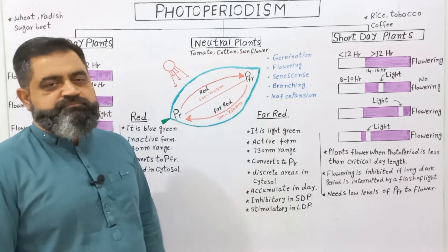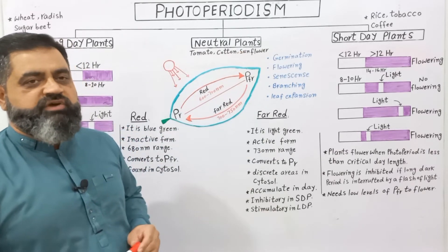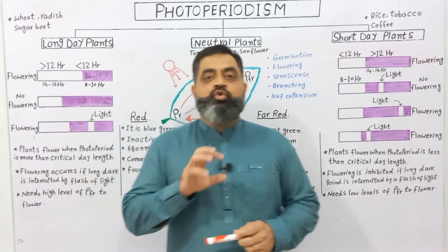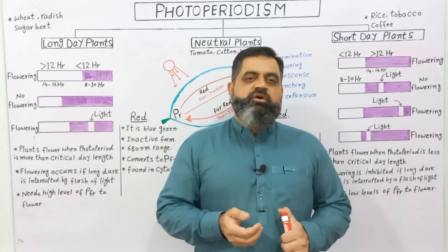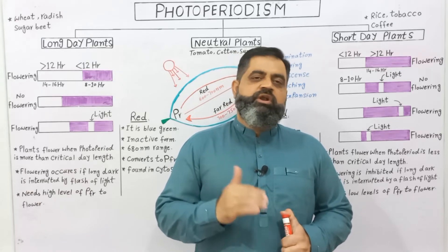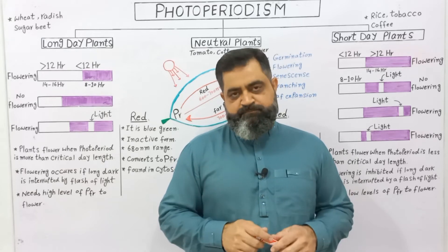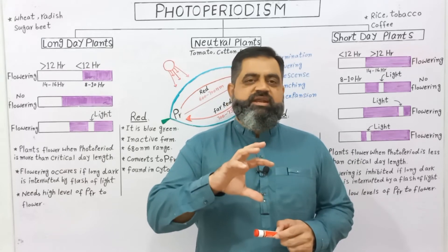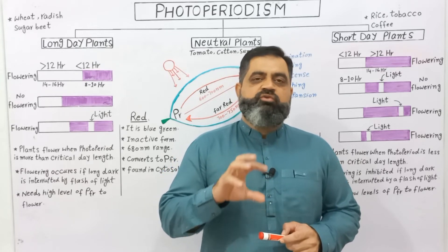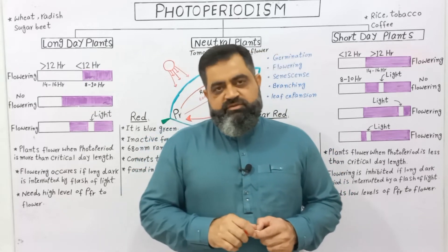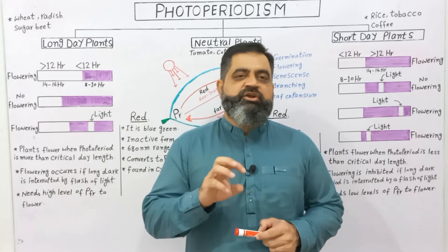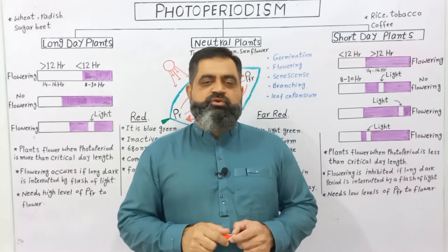Examples of day neutral plants are tomatoes, cotton, and sunflower. Now, what is the exact mechanism — how do plants determine whether it is day or night, and how they determine whether it is summer, winter, autumn, or any other season? To understand the exact mechanism of photoperiodism, we first have to look at the photosensitive pigments present in the cells of the plants, which are known as phytochromes. There are two types of phytochromes very important in the phenomena of photoperiodism.